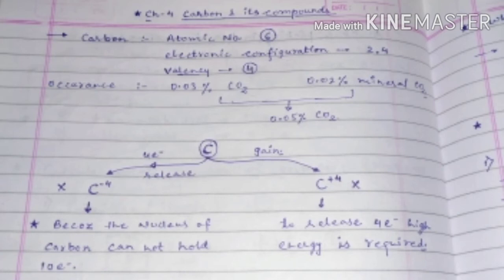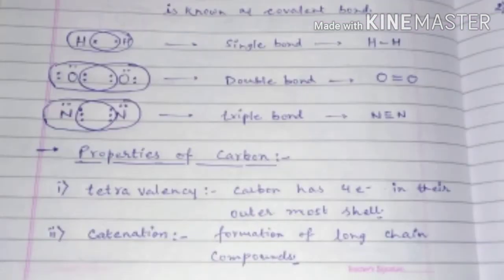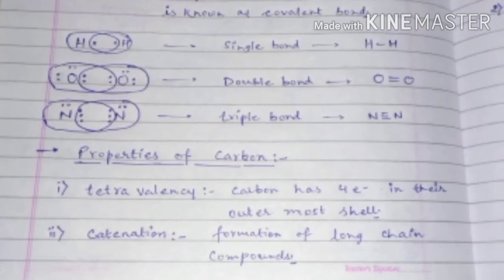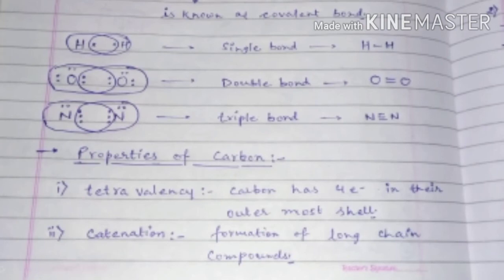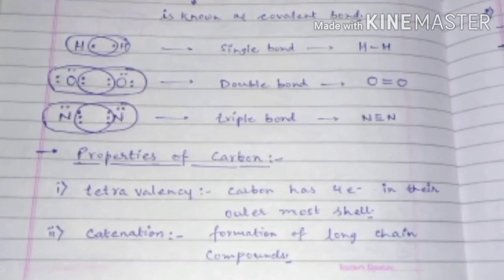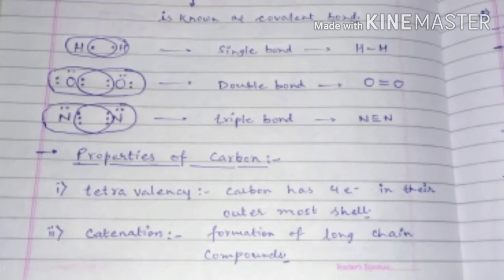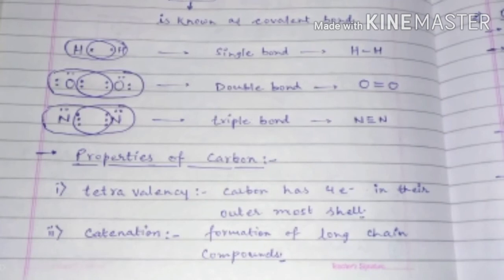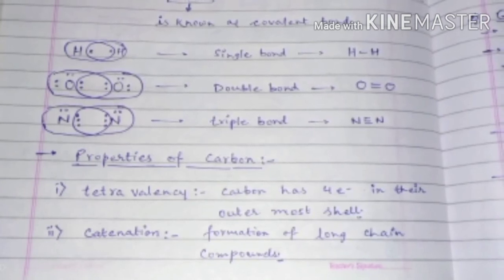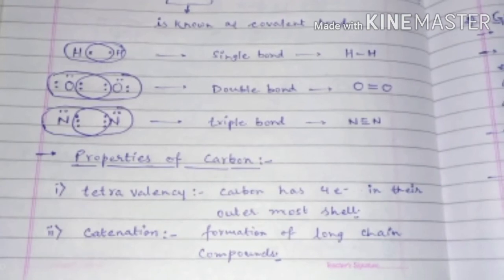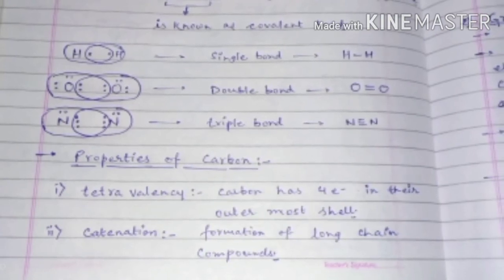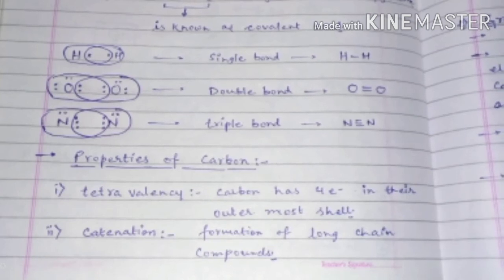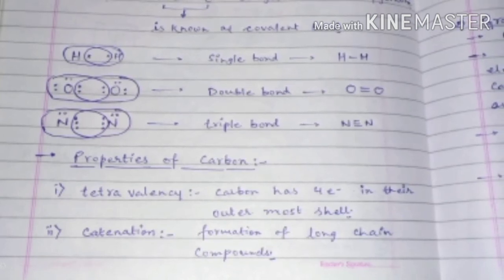Now we will discuss the characteristics and properties of carbon. Carbon has a valency of four, which is known as tetravalency. Carbon can also form long chain carbon compounds, and that property is known as catenation. These two properties are very important for carbon, because due to these two properties carbon naturally forms long chain compounds.